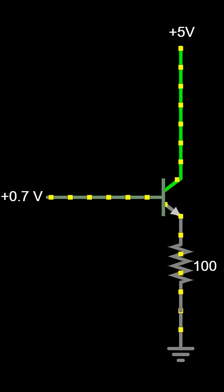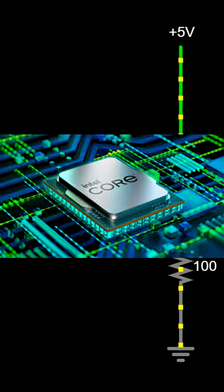This tiny device is the heart of modern electronics. Modern processors contain billions of tiny transistors working together. Without transistors, today's electronic world would not exist.